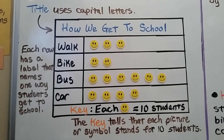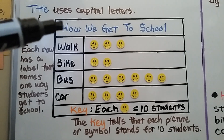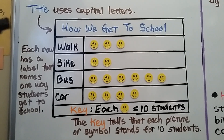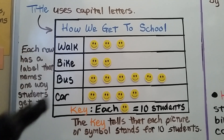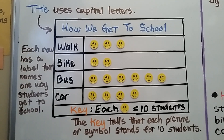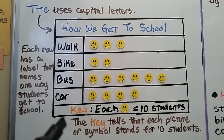This is a picture graph. The title is up here, and notice how each word in the title uses a capital letter. It's 'How We Get to School.' Each row — walk, bike, bus, car — has a label that names one way students get to school. At the bottom we have a key, and it tells us that each smiley face is equal to 10 students.